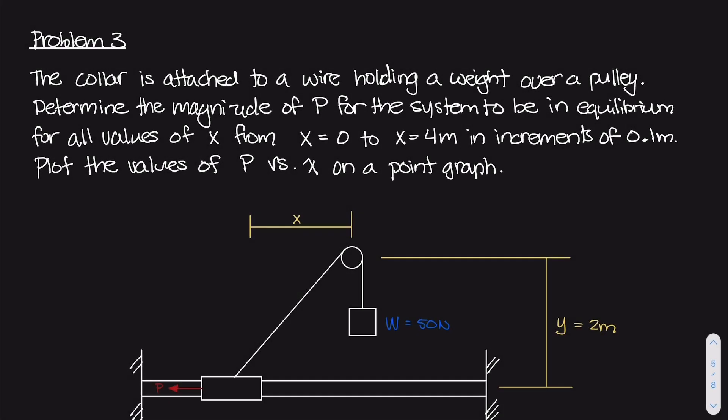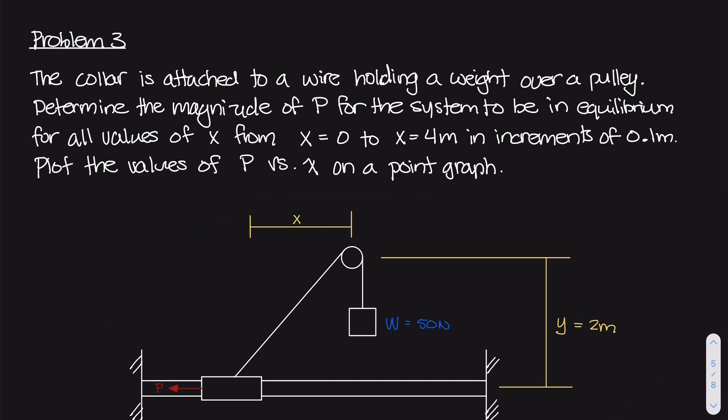Hey, welcome back to another statics problem in Python. In this problem, we have this system that I've drawn here, and there is this long bar attached to two supports on either end. We can assume that this bar is very, very long for the problem.